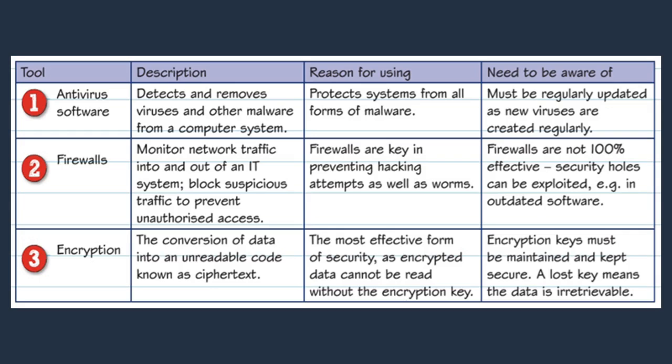The last tool is encryption. Encryption converts your data into unreadable code, so if a hacker does gain access to your data they won't be able to read what's inside. It's one of the best ways to protect your data because if someone doesn't have the encryption key they can't access it. However, an issue is that the key must be maintained and kept secure — if you lose your key you can lose your data altogether.